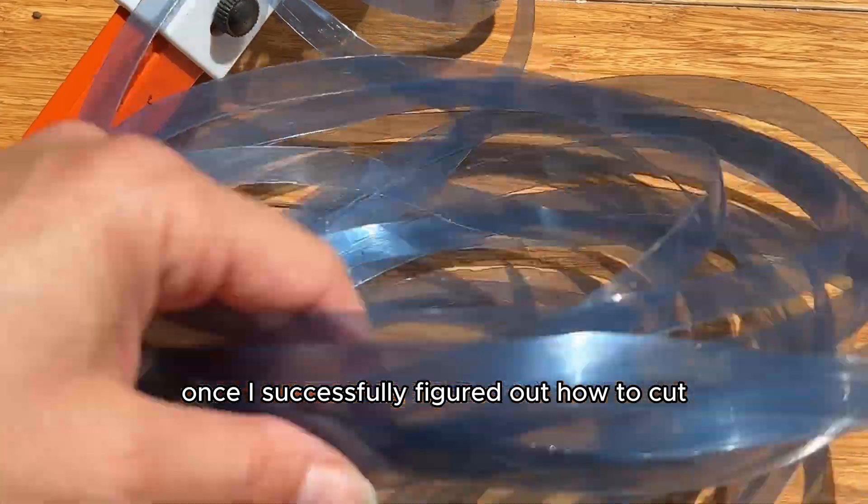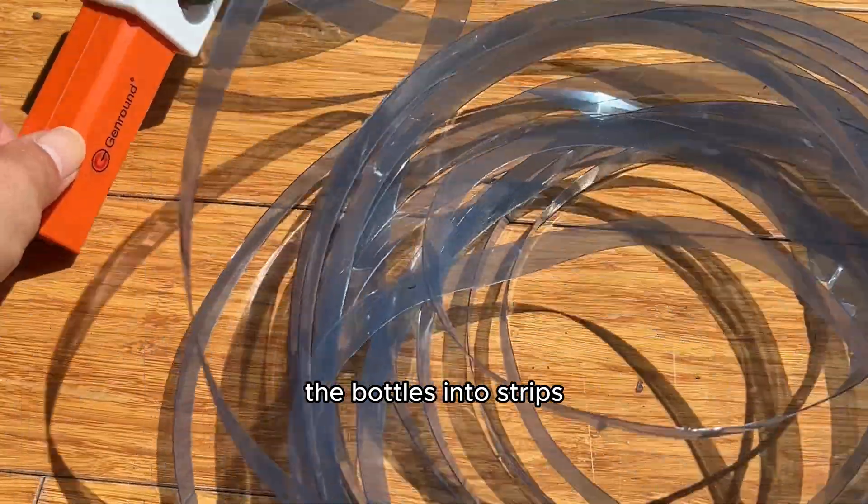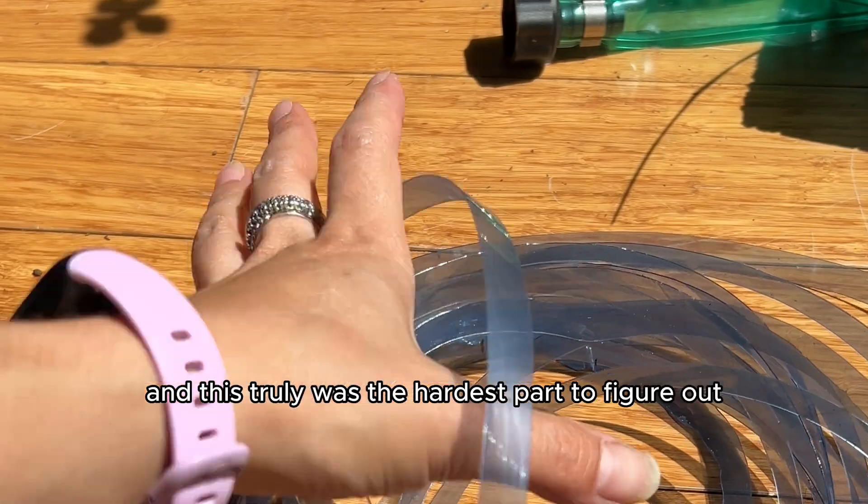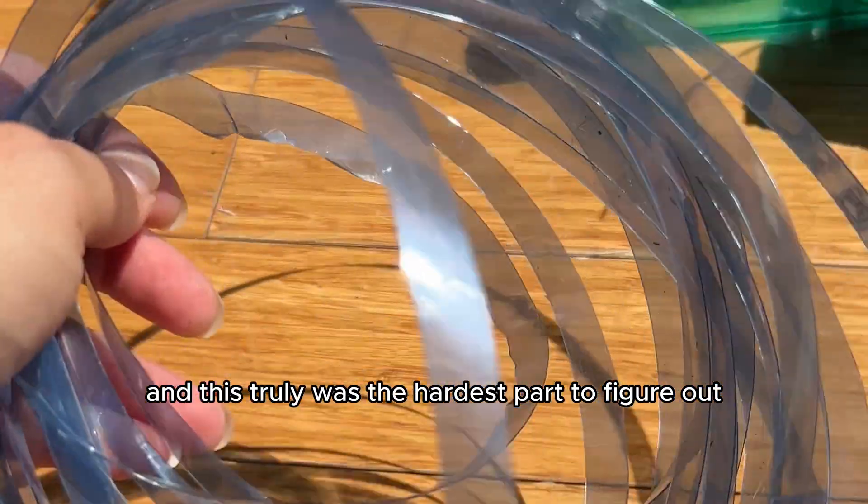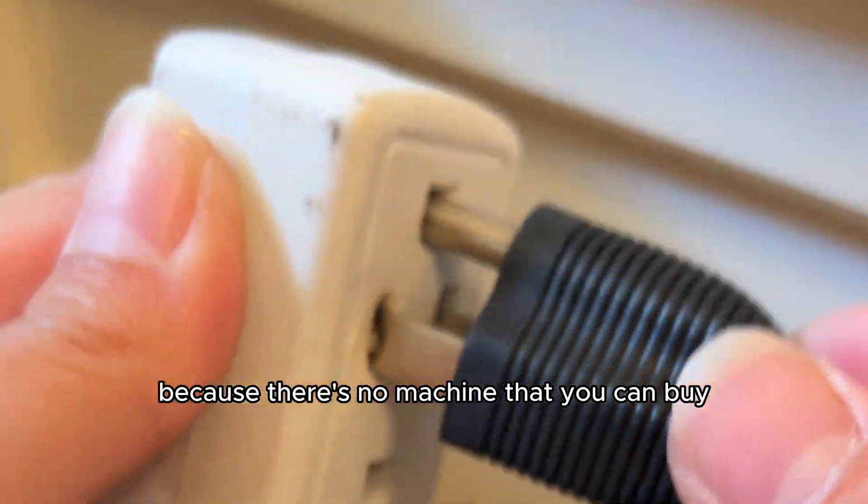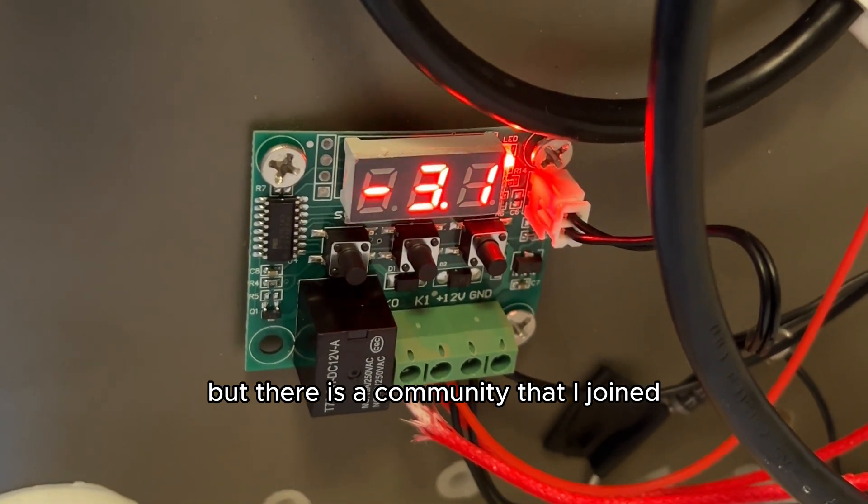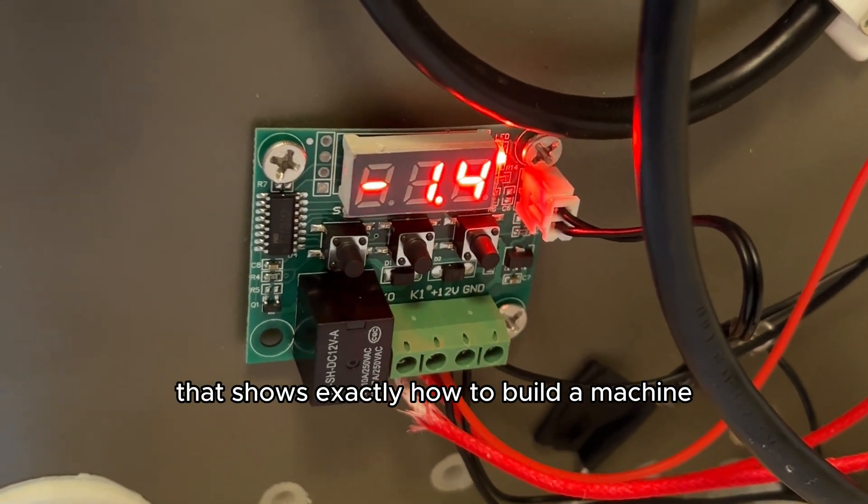Once I successfully figured out how to cut the bottles into strips it was time to actually morph the plastic into the filament, and this truly was the hardest part. There's no machine that you can buy that does this for you, but there is a community that I joined that shows exactly how to build a machine. It's called the Petamentor.